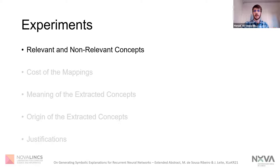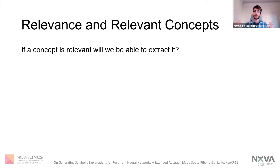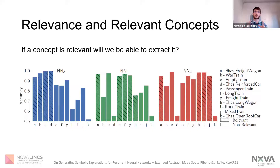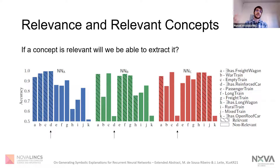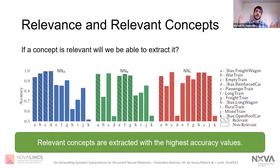We tried to extract both relevant and irrelevant concepts from our three neural networks. In this image, we present a summary of our results, highlighting the results obtained by mapping networks extracting relevant concepts. If you look, for example, at concept D, which is relevant in the first neural network but non-relevant in another, we can see it is extracted with very low accuracy there. So relevant concepts are being extracted with the highest accuracy among all concepts. Very interestingly, this hints towards the idea that the representations existing inside our neural networks are somehow related to those human-understandable relevant concepts.